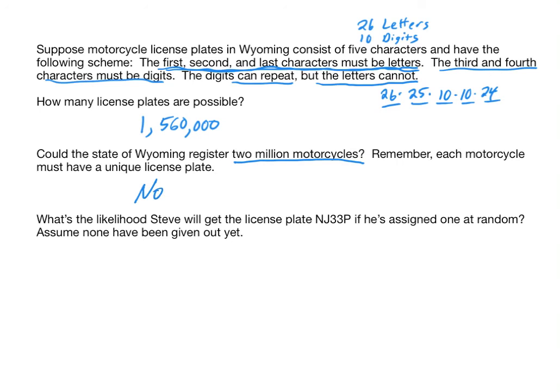Now let's get back to the probability again. What's the likelihood Steve will get the license plate NJ33P if he's assigned one at random? Let's say for some reason NJ33P has meaning to Steve. Maybe he's from New Jersey originally. He played baseball. His number was 33. Who knows? But if he wanted that specific license plate, that is one license plate out of the 1,560,000 total possible license plates. So if he was going to choose one at random, he's got a 1 in 1,560,000 chance of getting that specific license plate. So if Steve really wanted that, there's a very tiny chance that he would get that at random. This is why we have vanity plates. You can actually pay additional money to get specific license plates that you'd like to have if they're not already used by someone else.